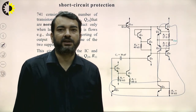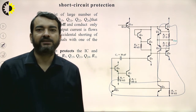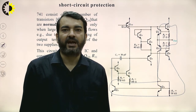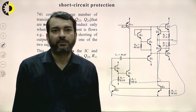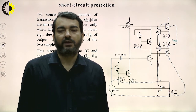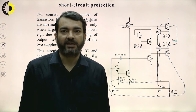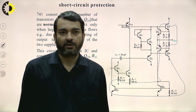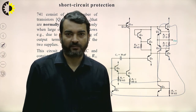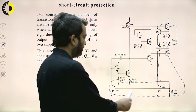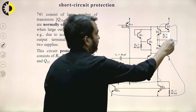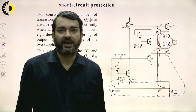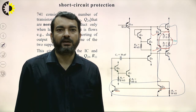Now we will see the short circuit protection. There is additional circuitry in IC 741 used for short circuit protection. Normally this circuit remains off and becomes active when a large current flows through the op-amp, for example if the output is accidentally connected to one of the power supplies. Just to protect the IC 741, this particular transistor pair Q22 and Q24, along with two resistors and transistors Q19 and Q21, will be active under large current flow conditions.